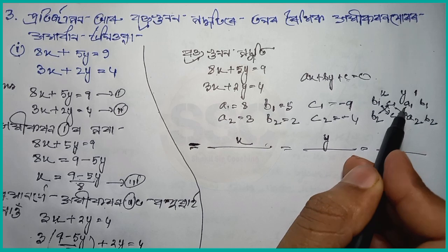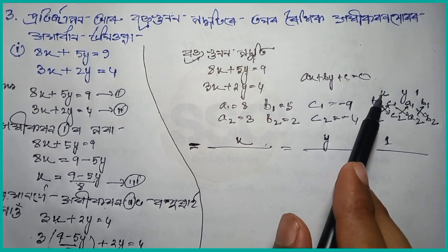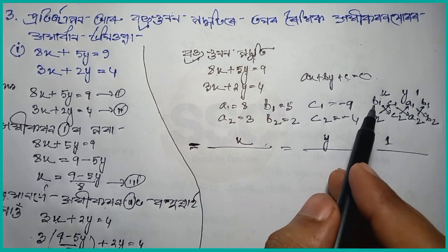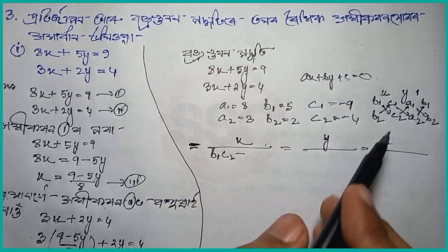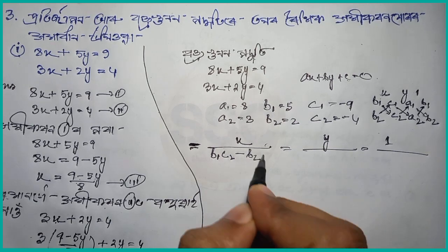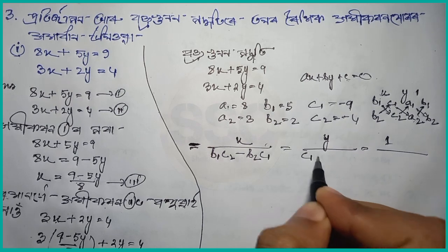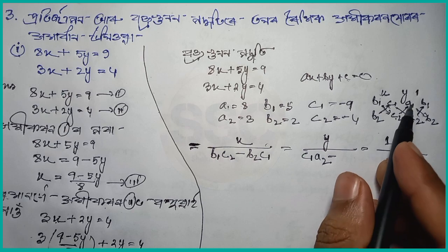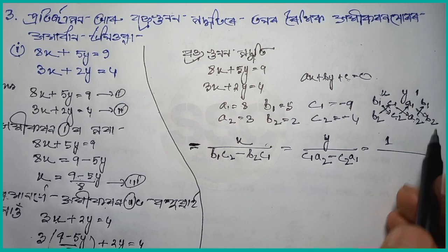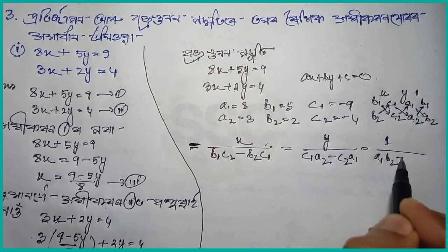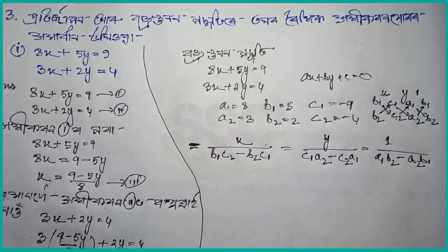In the cross-multiplication formula: numerator over denominator, denominator over numerator. For X, we write b1 times c2 minus b2 times c1. For Y, we write c1 times a2 minus c2 times a1. And the denominator is a1 times b2 minus a2 times b1. This gives us the cross-multiplication result. Now, X is at the top; b1 is 5. Then c2 is minus 4, so we put minus 4 in the bracket.